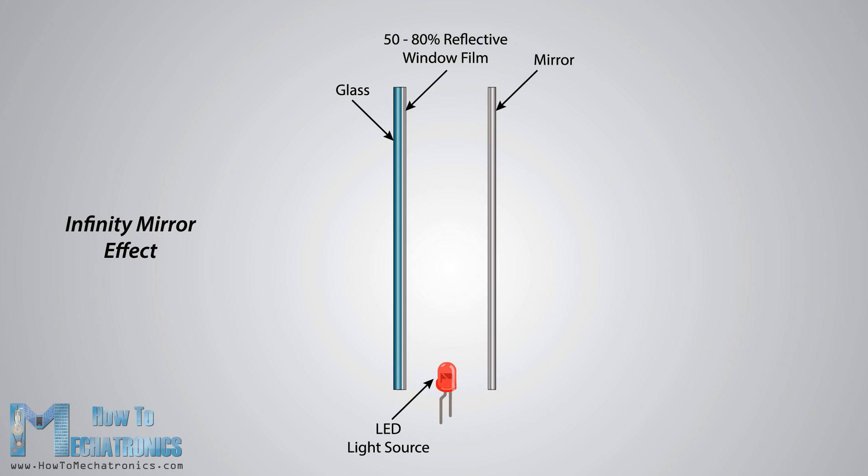Depending on the quality of the film and the amount of reflection it provides, the light will keep bouncing between the mirror and the glass but at the same time some light will escape through the glass. Therefore from the other side of the filmed glass you will be able to see the infinity effect.